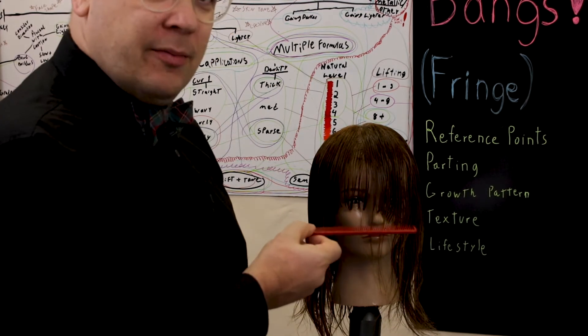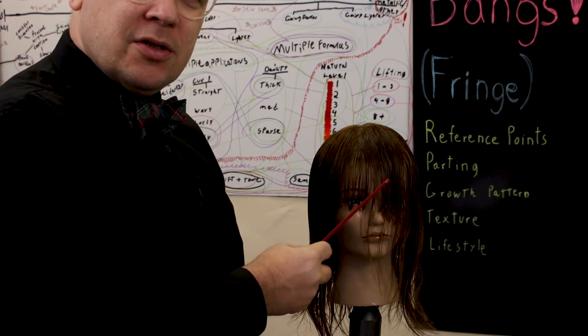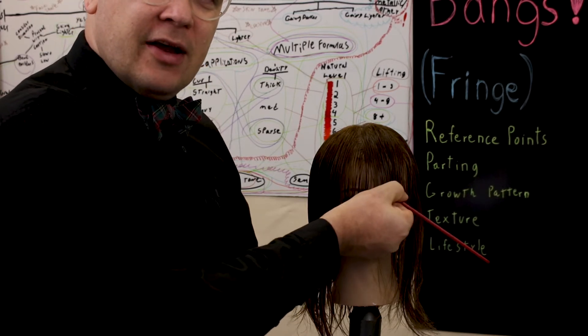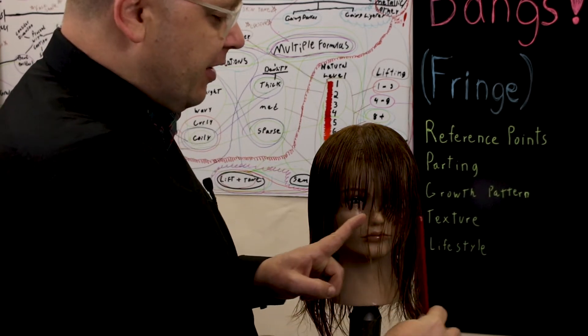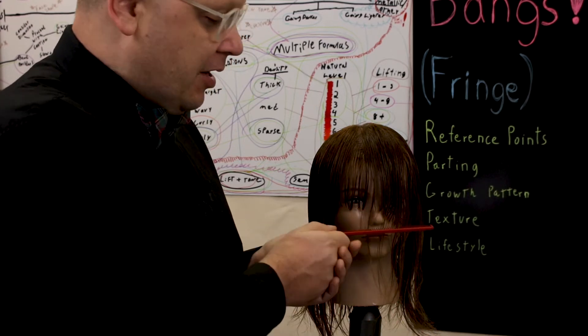The first video we did was the curtain fringe or curtain bangs. They were straight across. So if I parted to one side, they would go short to long. If I parted to the other side, they would go short to long. And if we parted in the center, they would still have a very subtle short to long because they were flat.